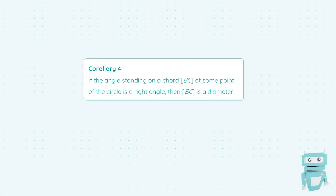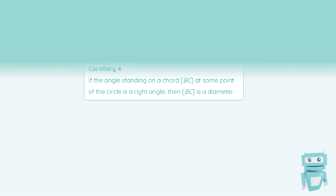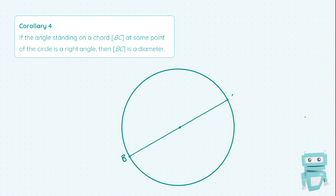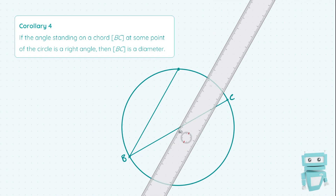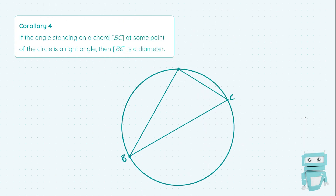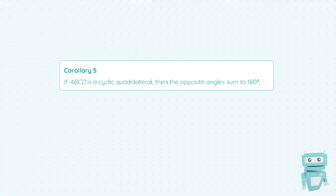This satisfies the same conditions as our theorem — it's just the specific case when we have 180 degrees, since a semicircle involves a straight line which is 180 degrees. That proves Corollary 3. Corollary 4 states that if the angle standing on a chord BC at some point of the circle is a right angle, then BC is a diameter. So if we draw another circle with chord BC, take some other point on the circle and join it to both B and C — if this angle is in fact a right angle, then BC is a diameter and passes through the centre of the circle. The implication works both ways, just like Corollary 3.